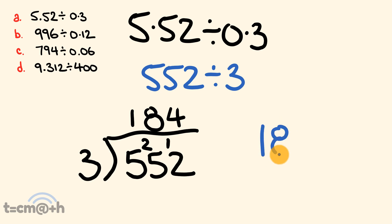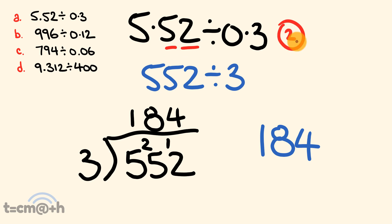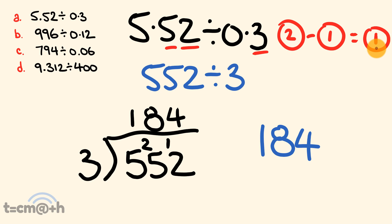This gives us an interim answer of 184, but now we have to deal with the decimals — where is the decimal place going to go? We look at our original numbers: 5.52 has two numbers to the right of the decimal place, so that's 2. We're dividing by 0.3, which has one number to the right of the decimal place, so that's 1. We simply subtract: 2 take away 1 equals 1, so we'll have one decimal number. Starting from the right, we move in one place and our decimal goes right there.